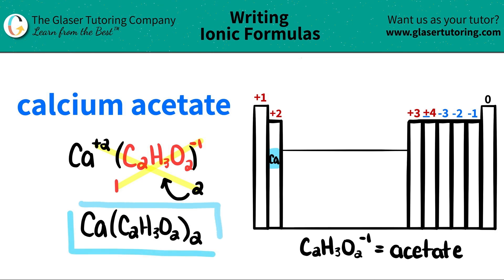So calcium acetate is Ca(C₂H₃O₂)₂. Thank you so much for watching the video. I really hope this helped — let me know in the comments, subscribe to the channel if you want to help us out, and I hope you're having a great day. Talk to you soon, bye!